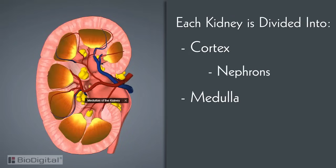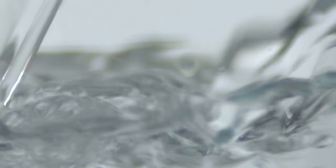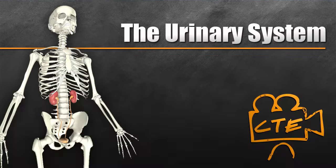Inside the cortex of both kidneys are thousands of microscopic filtering units called nephrons. Remember, it's important to drink lots of water in order for the kidneys and the urinary system to continue to function properly. Thanks for watching — for more videos on the urinary system, visit cteskills.com.